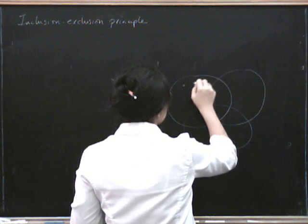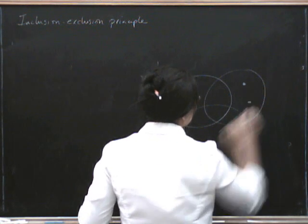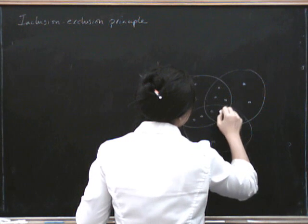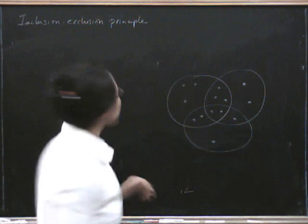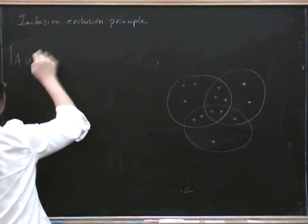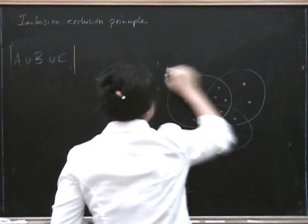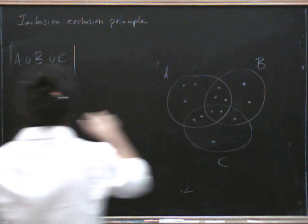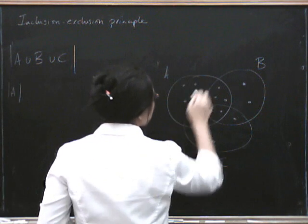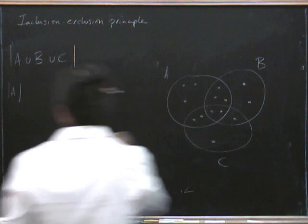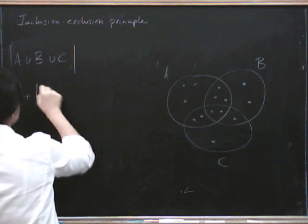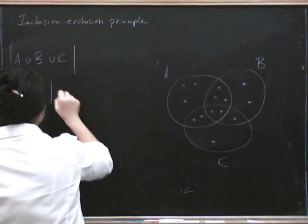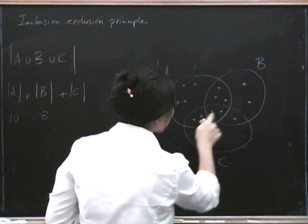Here's my 3-intersecting-circles Venn diagram. Supposing I've got a few things in here, a few things in there, something in here, maybe a couple of things in there, a few things there, a couple of things here, and a thing in there. Now, we're going to count the number of elements in A union B union C. Here's A, here's B, and here's C. If I start by counting all the elements in A, I get 10. Then counting all the ones in B, I get 8. Then counting all the ones in C, I get 6.